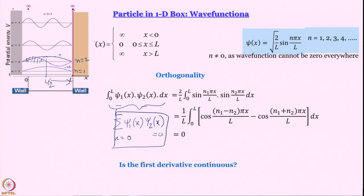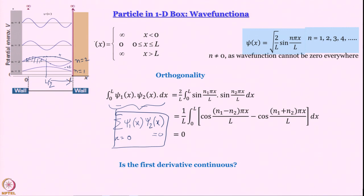Is the first derivative continuous? Yes, except at x = 0 and x = L. The derivative of sin(kx) is cos(kx); at x = 0, cos(k·0) = 1, but just outside the box the wave function is flat, so the derivative is 0. There is a discontinuity in the first derivative at the boundaries. This is acceptable — there is a more sophisticated treatment that avoids this, but for our purposes, a discontinuous first derivative at boundaries is fine as long as it is continuous inside.